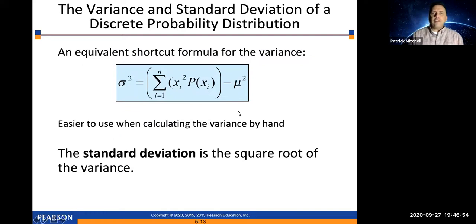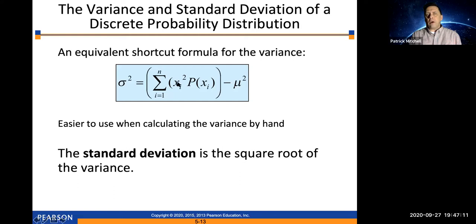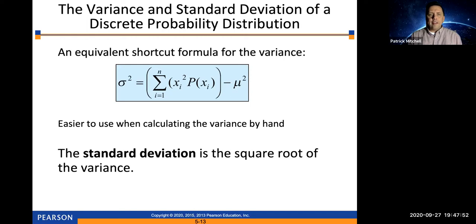Here is the equivalent shortcut formula. You do still have to find the mean first. The way this one works: square each value of the random variable, multiply those squares by the corresponding probabilities, add those together, and then at the end subtract the mean squared. This formula is easier to use when calculating the variance by hand. And just like in Chapter 3, the standard deviation is the square root of the variance.